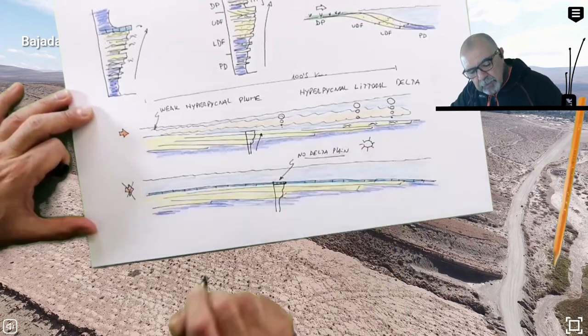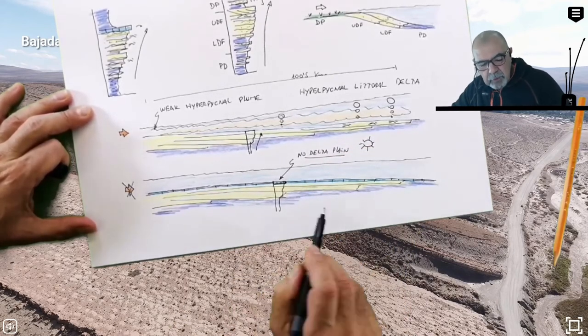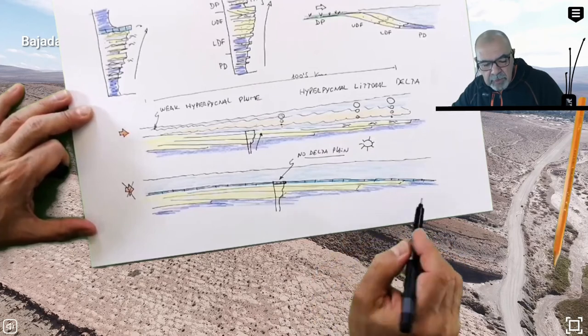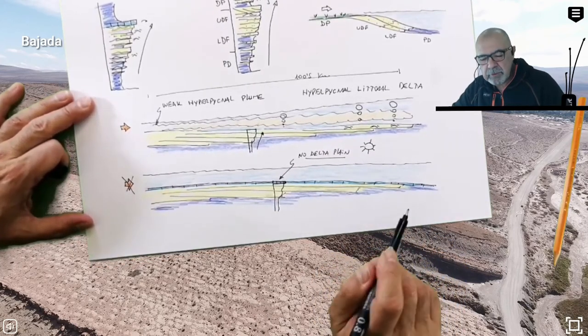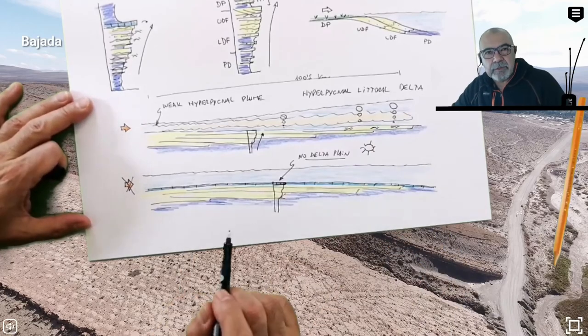But typically in this situation we have no delta plane on top, a typical situation of these shallow, very shallow water ramps. Thank you for attending to this explanation.